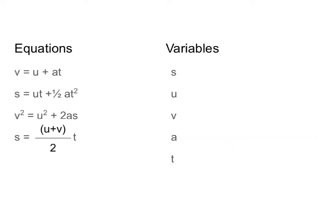Let's begin with what our equations actually are. There are four kinematics equations listed on the left side of the screen. Each of them is a combination of four of the five different variables listed on the right side of the screen. Our first variable is s, and we're going to use s to show our displacement. It's important to know that s is displacement, not speed. The units for displacement are meters, though you might see kilometers or centimeters, which will affect your final answer.